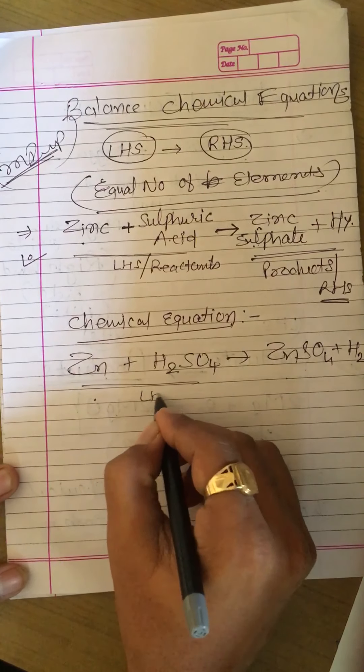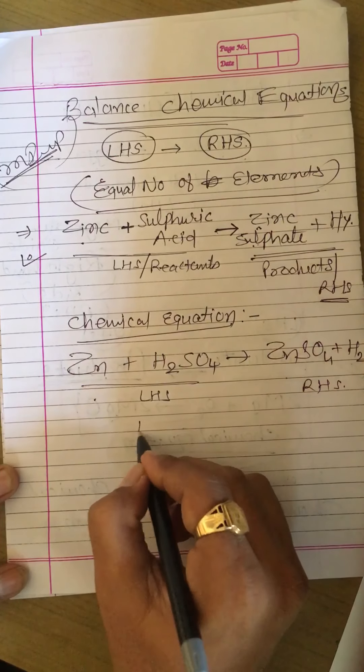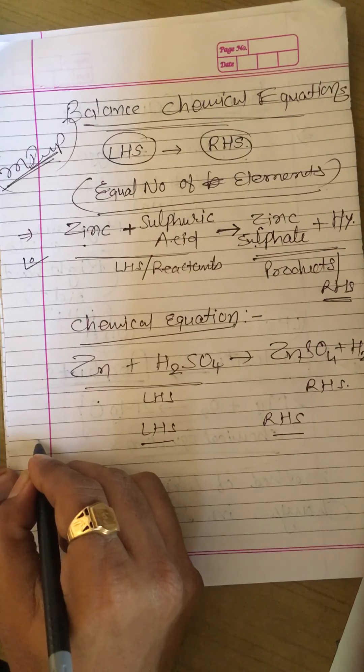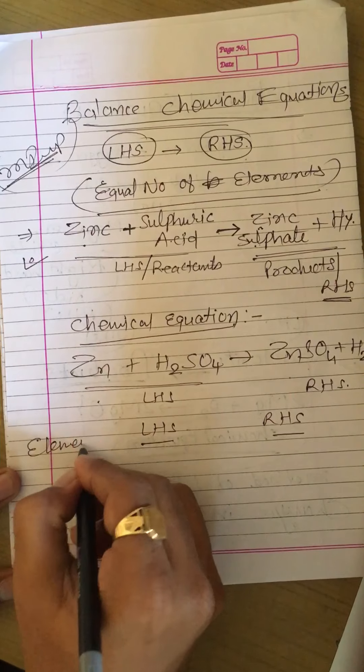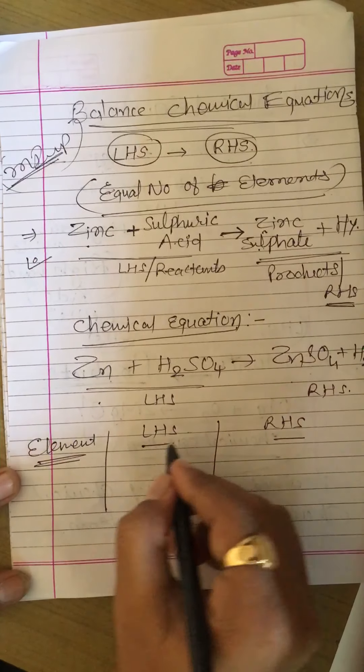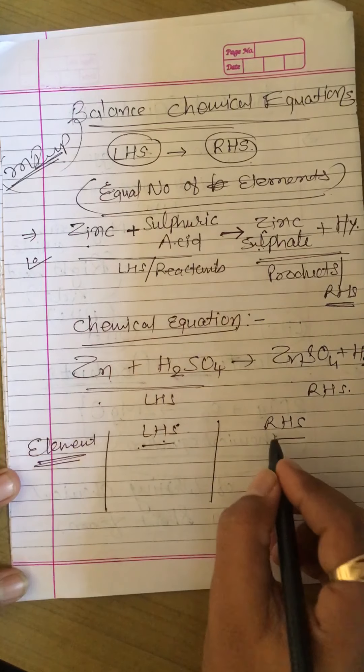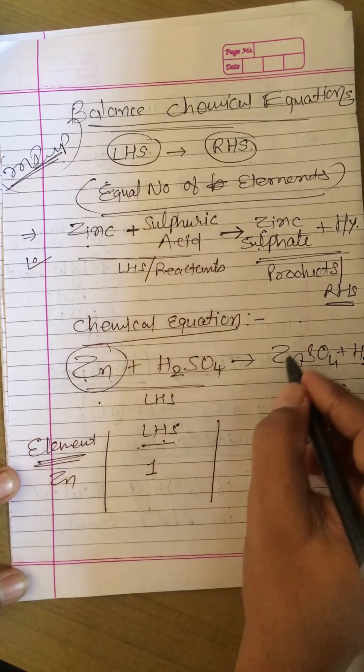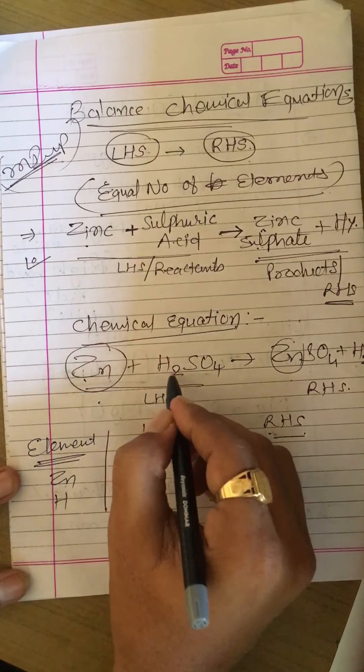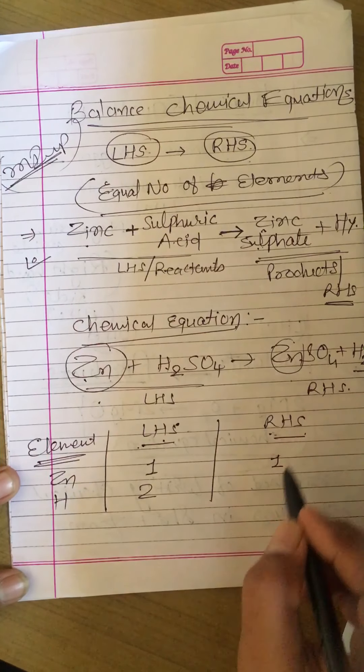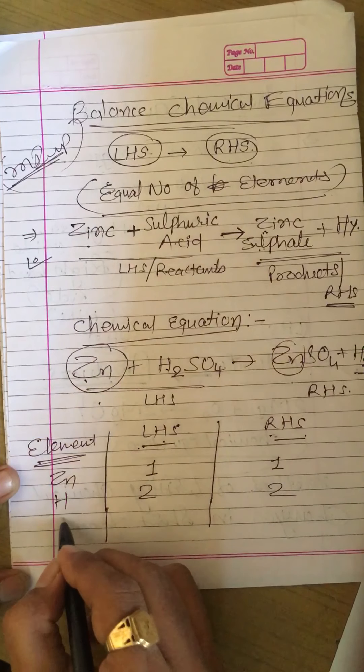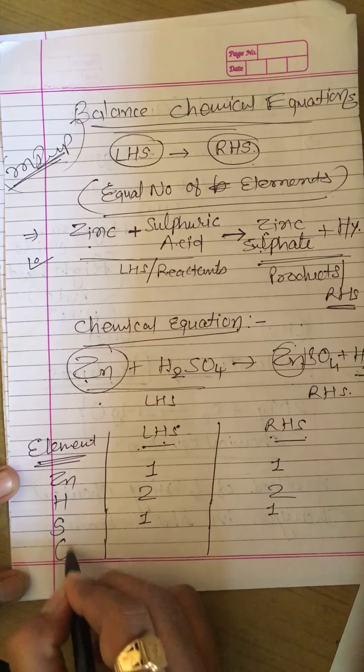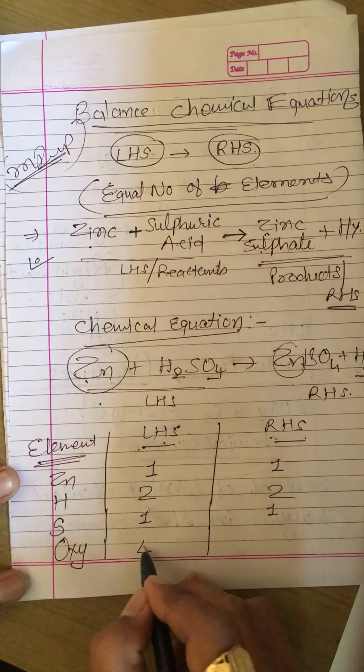As you can see friends, this is LHS, this is RHS. In LHS and RHS if we want to check, then here we have to write first number, element in first column, then in second column number on left hand side, number on right hand side. Zinc is one, as you can see, one zinc is there, here is also one. Hydrogen - two hydrogen elements are there, here are also two elements. Sulfur is one on LHS and also one on RHS. Last, oxygen - oxygen is four numbers and here is also four numbers.